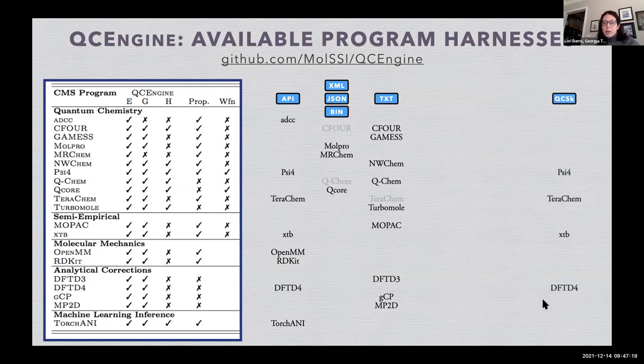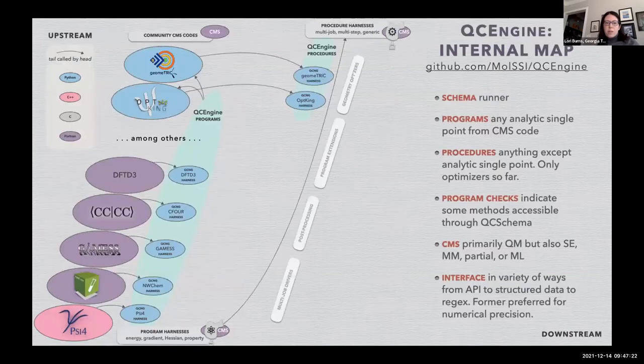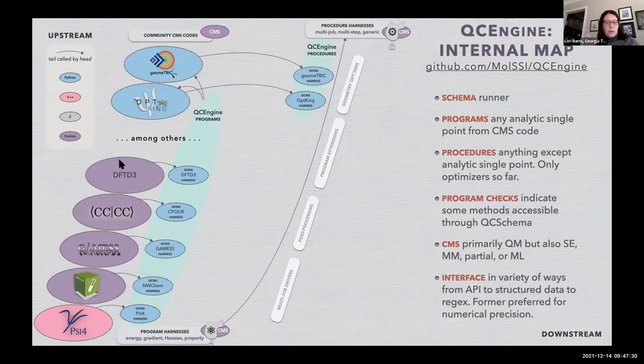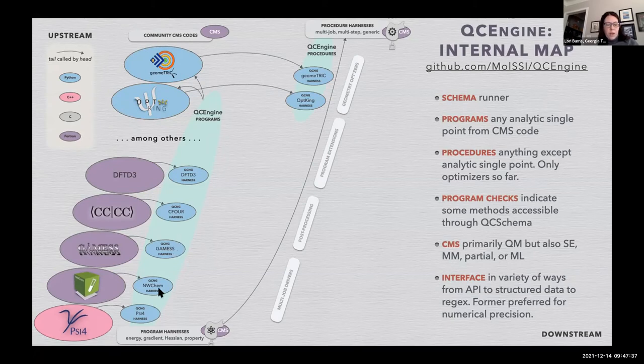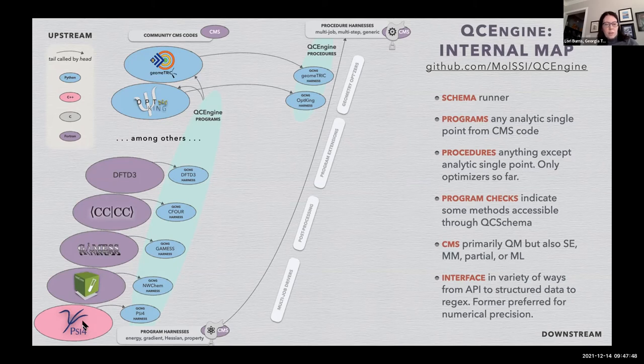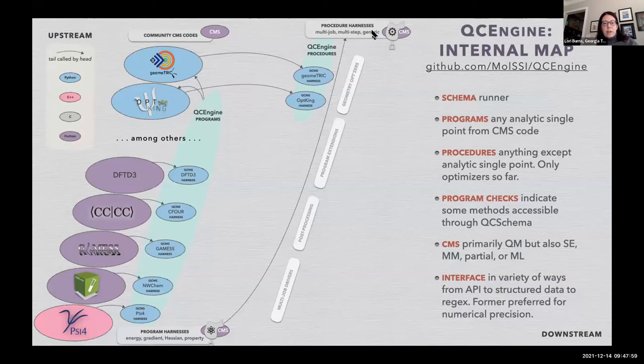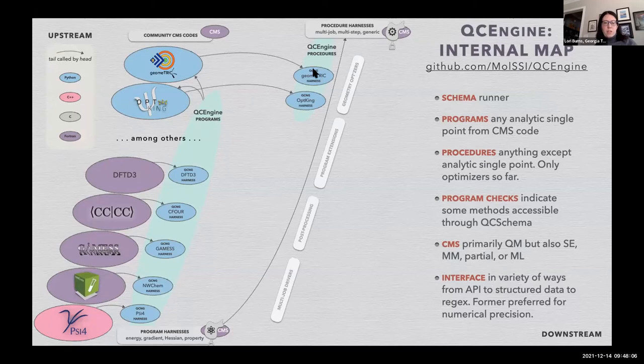A few codes have gone a step further and actually implemented QC Schema input natively. What this looks like as a sort of map is that the QC programs—they each have a QC Engine program harness in QC Engine. A program harness is anything that can extract an energy, gradient, hessian, or property analytically out of a QC program. Additionally, there are QC Engine procedures, which is anything left over—things that are multi-job, multi-step, or need generic or can act on generic specifications. So things like geometry optimizers for geomeTRIC or for optking can act on anything as long as they can get out an analytic gradient.